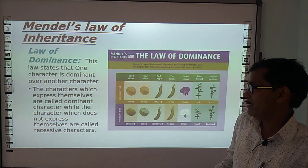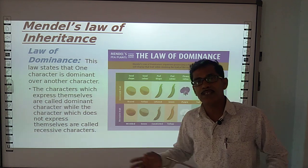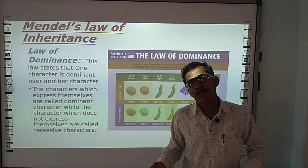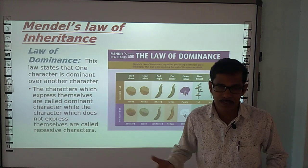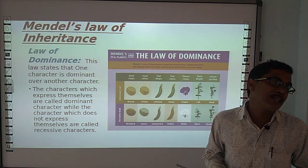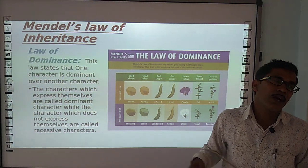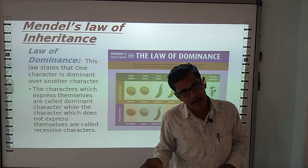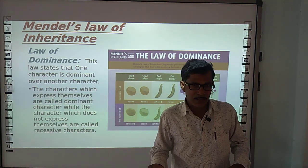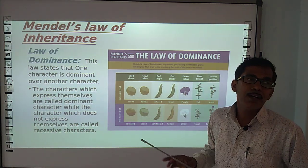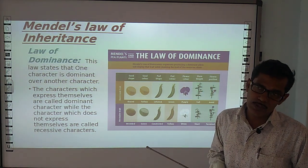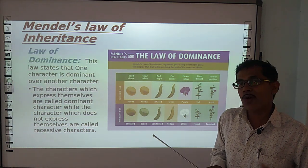According to the Law of Dominance, the characters which express themselves in the F1 generation are called dominant characters, and the characters which are unexpressed in the F1 generation are called recessive characters.